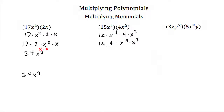15 times 4 is 60. And x to the fourth times x squared — remember, you add your exponents when you multiply — so this would be x to the sixth. So 15x to the fourth times 4x squared is just 60x to the sixth.